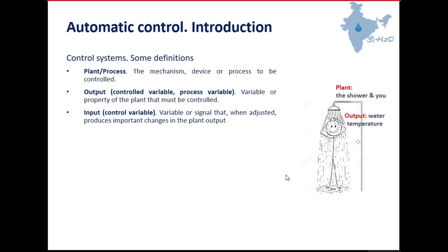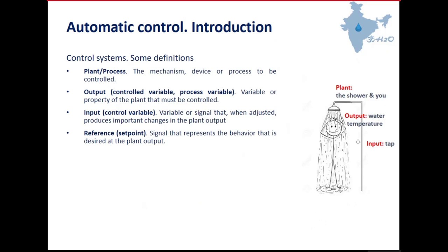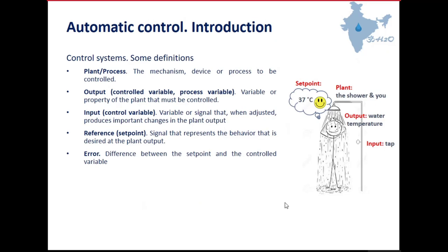The input, also called the control variable, is the signal that, if you change it, the plant output changes. In this case, the input is the tap, because if you modify it, the water temperature changes. The reference or set point is the value you want at the output — for example, when taking a shower you feel comfortable at 37°C; this is your set point. The error is the difference between the set point and the real value of the temperature in the water.